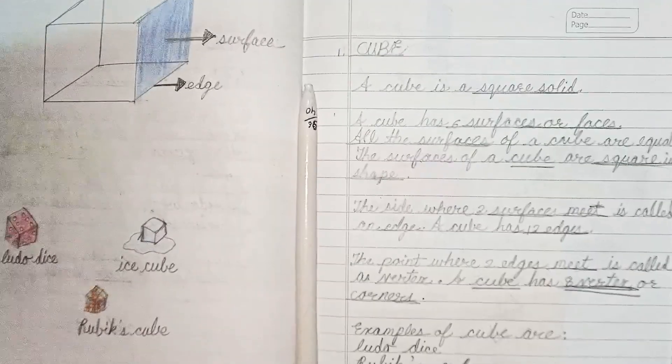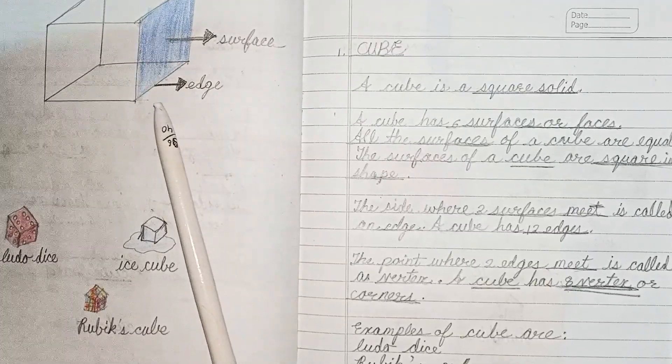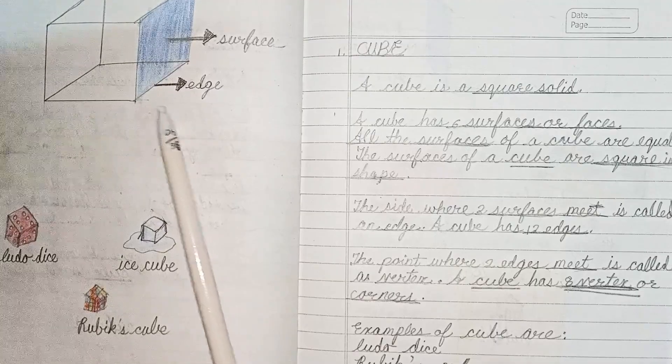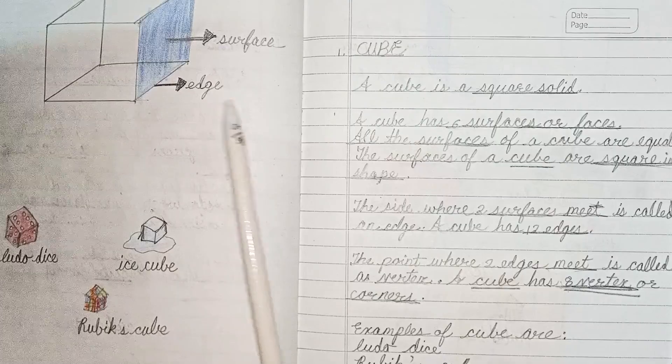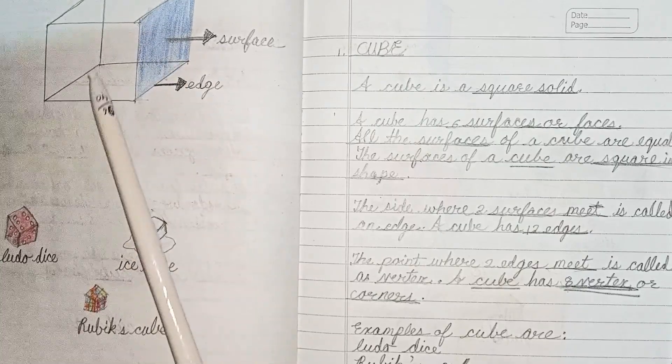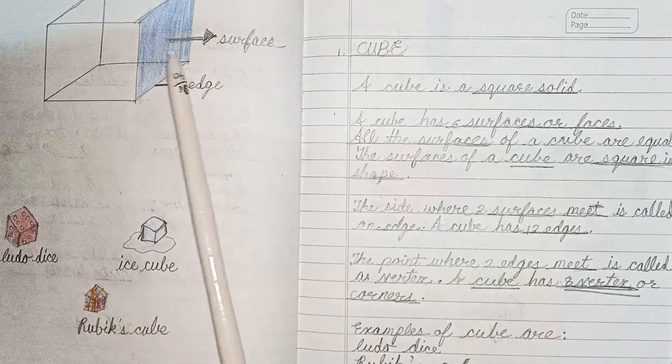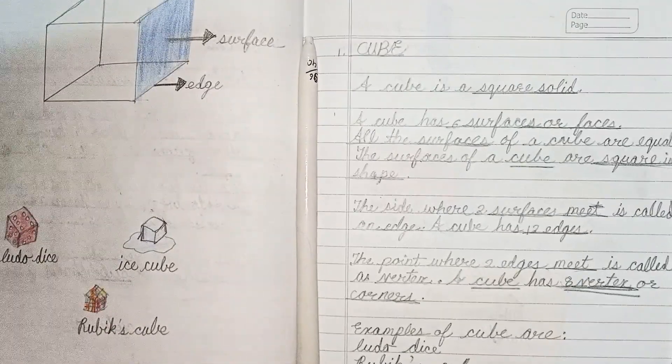The surfaces of a cube are square in shape. The side where two surfaces meet is called edge. A cube has 12 edges. The point where two edges meet is called vertex. A cube has eight vertices or corners.